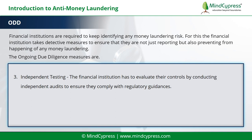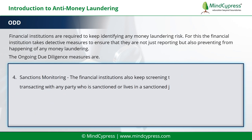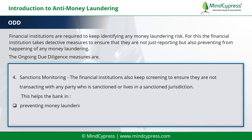3. Independent testing — the financial institution has to evaluate their controls by conducting independent audits to ensure they comply with regulatory guidance. It helps in implementing significantly higher demands on audit, increasing governance and oversight. 4. Sanctions monitoring — the financial institution also keeps screening to ensure they are not transacting with any party who is sanctioned or lives in a sanctioned jurisdiction. This helps the bank in preventing money laundering and terrorist financing, and providing valuable inputs to the government.